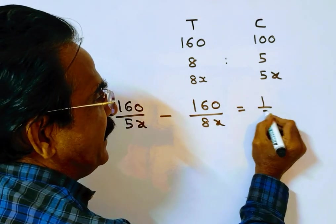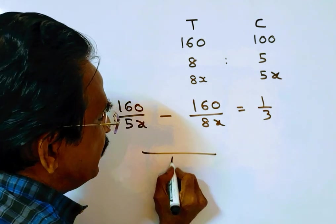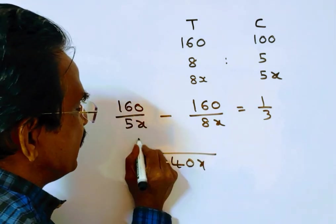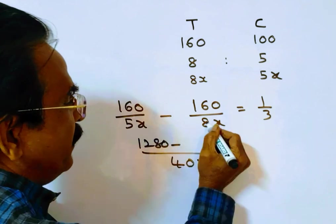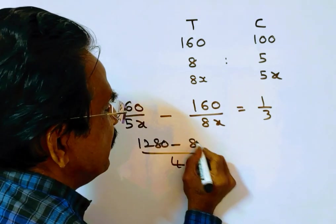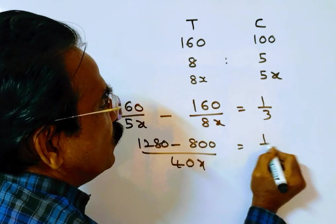So 160/5x minus 160/8x equals 1/3 hour. That's 1280/40x minus 800/40x equals 1/3.